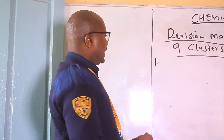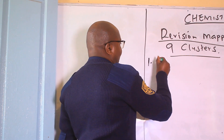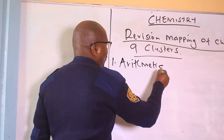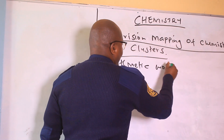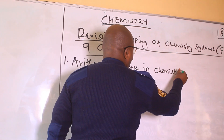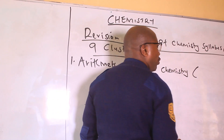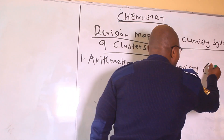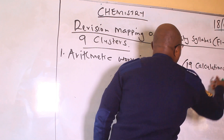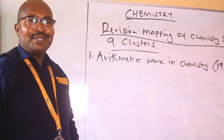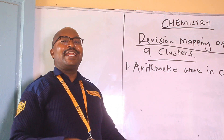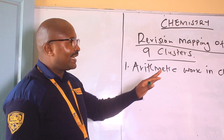The first cluster is arithmetic work in chemistry. We have only 19 calculations in chemistry, so students do not have to worry much about arithmetic work in chemistry. Only 19. When we go through these 19 calculations,